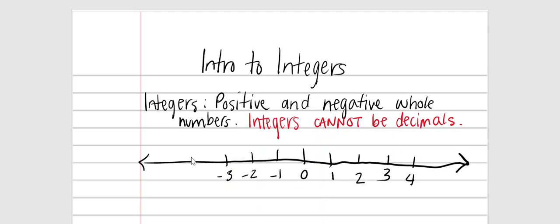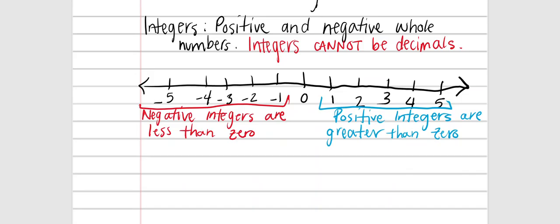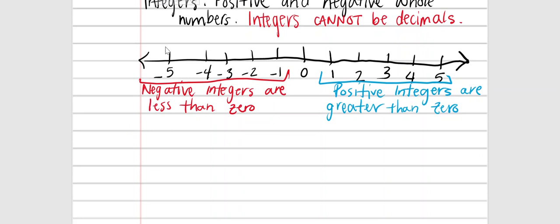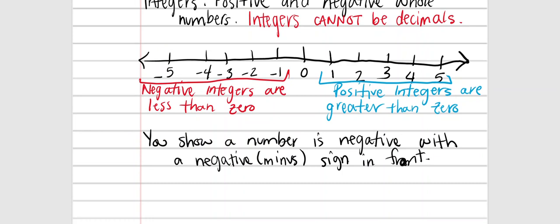For every positive whole number there is a negative whole number. We're going to go to positive five and negative five. Positive integers are greater than zero, or to the right of zero. Remember, this arrow represents that the number line keeps going — six, seven, twenty, and one hundred are all positive integers. The same applies to negative integers; negative six, negative eighteen, and negative forty are all negative integers. You show a number is negative with a minus sign in front of it.